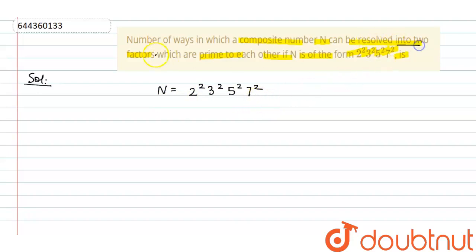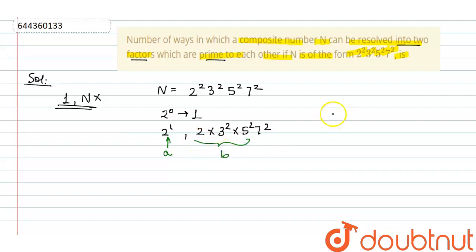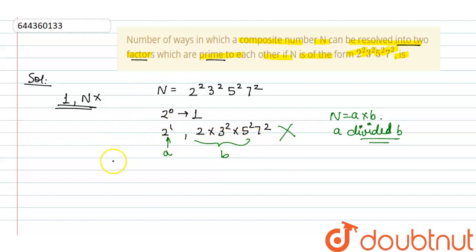We have to resolve n into two factors which are co-prime to each other — meaning the first number should not be a factor of the second. If we take 2⁰, that equals 1, and 1 is a factor of all numbers, so the case 1 × n is not valid. If we take 2¹, the remaining part is 2 × 3² × 5² × 7², and clearly 2 divides that remaining part, so they are not co-prime — this case is also not valid.